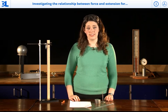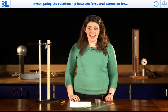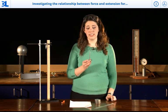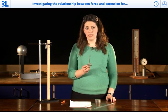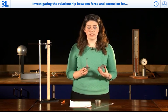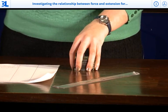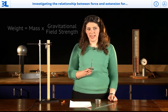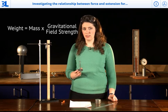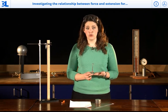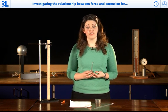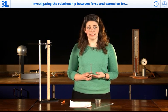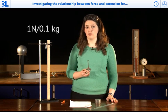The force we're going to be using today is weight, and that is basically the force of gravity on a mass. So we're going to be using some slotted masses and a hanger. Each of these masses weighs 100 grams. That means it has a force of 1 newton upon it because weight equals mass times gravitational field strength. The mass here is 0.1 kilograms, and on Earth, gravitational field strength is 10 meters per second squared. Multiply those two numbers together, and you get 1 newton per 0.1 kilograms.